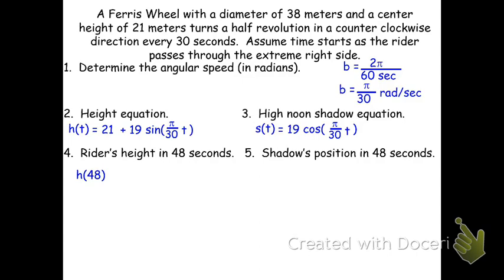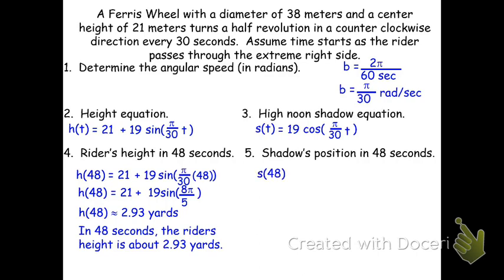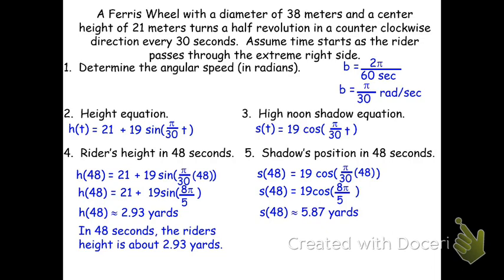The rider's height at 48 seconds: h(48) = 21 + 19·sin(π/30 × 48). Simplifying 48π/30 gives 8π/5. Typing 21 + 19·sin(8π/5) in radian mode gives approximately 2.93 meters — they're near the bottom of the ride. The shadow position s(48) = 19·cos(8π/5) ≈ 5.87 meters, which is positive, meaning 5.87 meters to the right of center — placing the rider in quadrant 4.